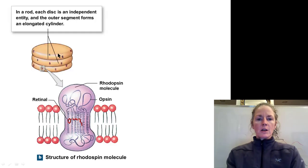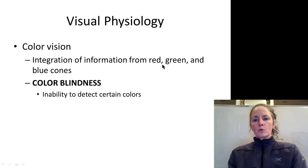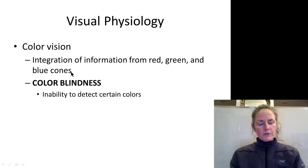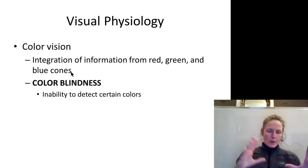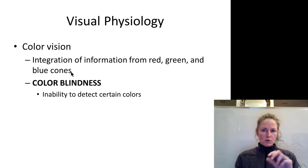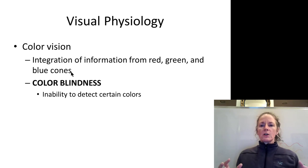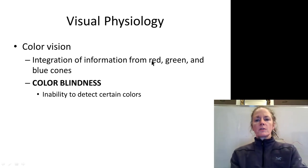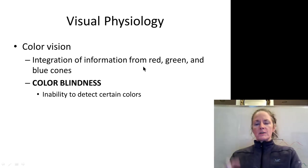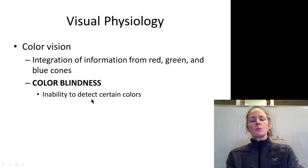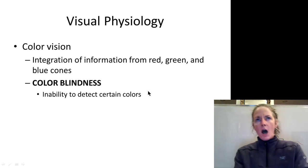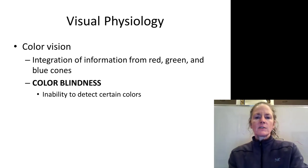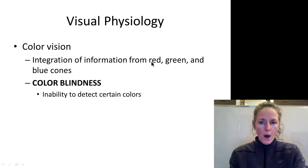Now let's talk about color vision. We have red, green, and blue channels. If you've worked with video or photo editing, you know images have red, green, and blue channels you can adjust to create millions of different colors — and your eyes work the same way. There are red cones, green cones, and blue cones. Some types of color blindness occur when you are lacking one of these cone types — usually the red cone. The most common type is red-green color blindness, where red and green look the same, appearing as a brownish color.